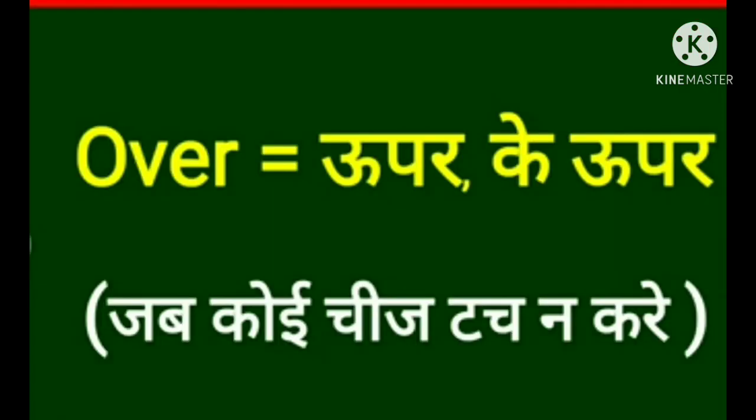The next preposition is 'over'. Over ka matlab hota hai 'upar' (means above). It is used when something is above but not touching — upar hai lekin touch nahi kar raha.